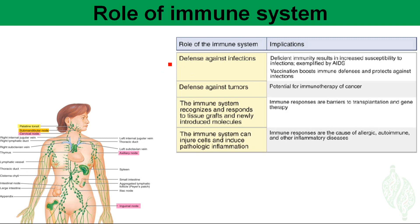What is the role of the immune system? There are four key roles. First, defense against infectious agents such as bacteria and viruses. When the body has deficient immunity, bacteria and viruses can win and cause pathogenicity — for example, HIV/AIDS can get inside our body, and the same is true for other bacteria and viruses.